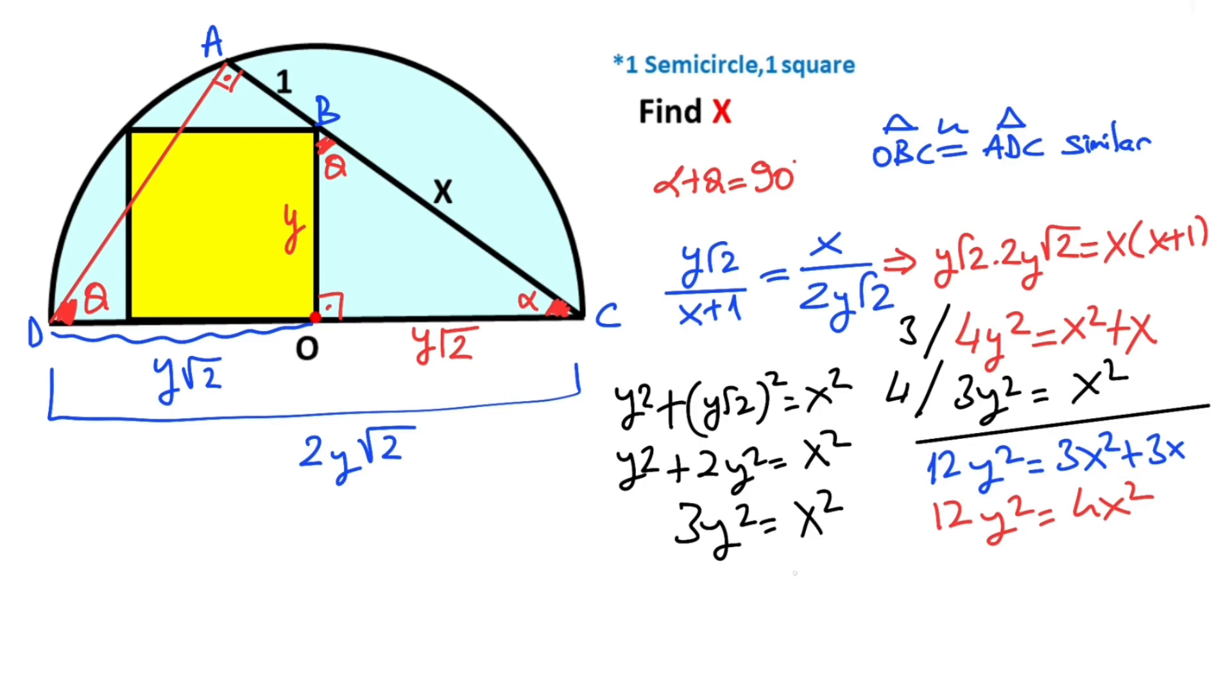Notice that these two equations are equal, so if we equalize these two equations: 3x² + 3x = 4x², so 3x = x². The first root must be equal to zero, and the second root must be equal to 3. That means x is going to be 3.